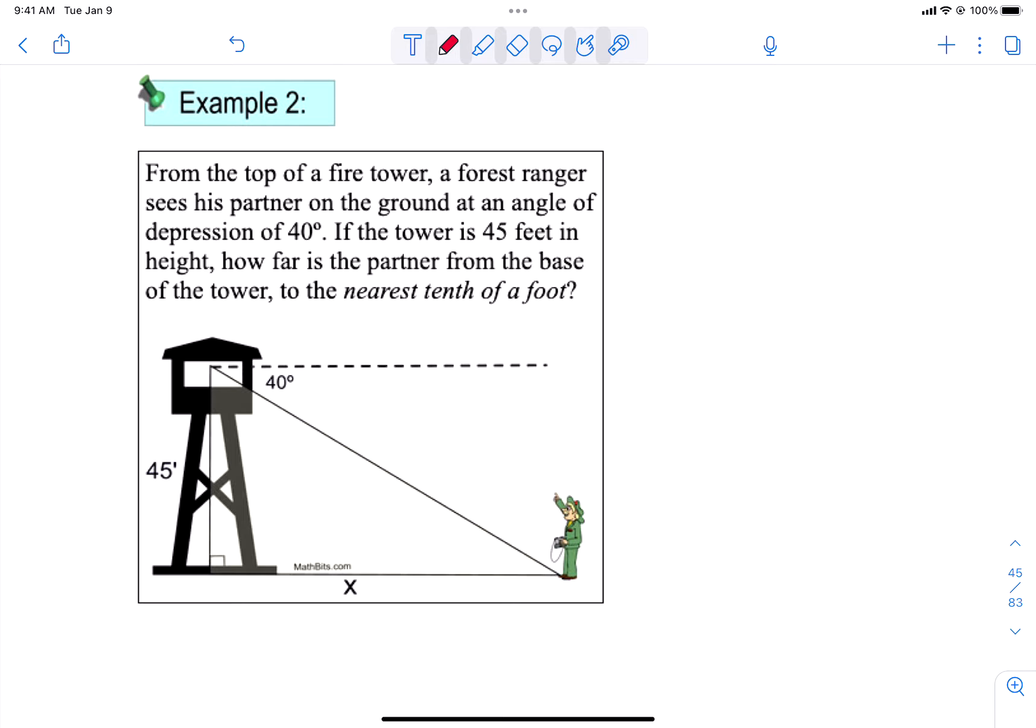We are looking for how far away we are from the forest ranger. And we know we have to drop our head 40 degrees at an angle of depression to see the forest ranger. Now you'll notice we don't have an angle inside the triangle. So we could put it down here in that bottom right corner because of the fact that alternate interior angles are congruent. So that's 40 degrees.